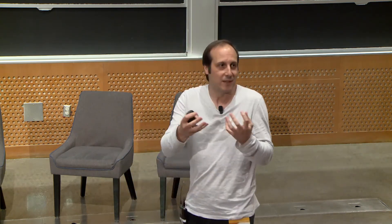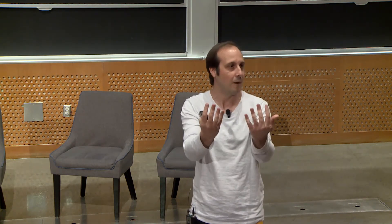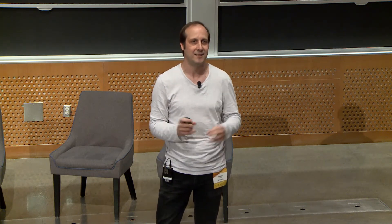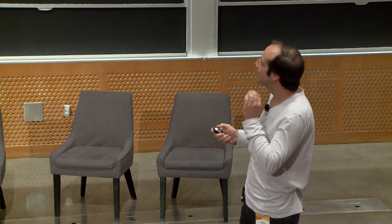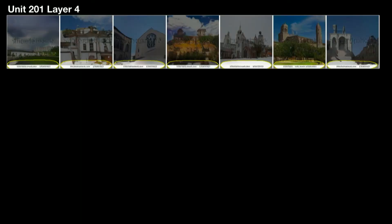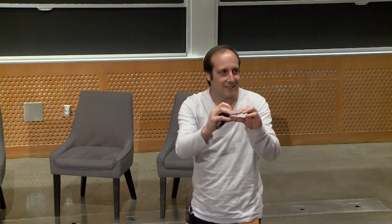We started looking to see if there was some representation that made sense, or if everything was mixed and only the output pixels made sense. We have the system here that produces an image with a watermark. The question is: is there a unit that, when turned on or off, a watermark appears or not? And indeed, we found such units. Looking at one of the layers in the network, we found that unit 201 in layer 4, whenever it got activated, generated images where a subtitle appeared on the picture.